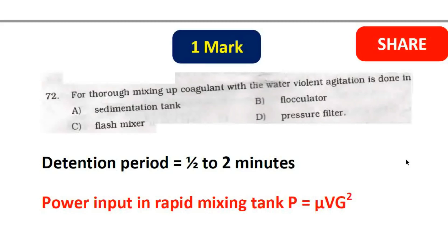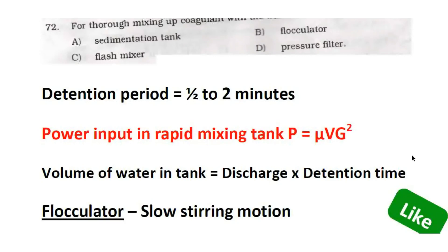Detention period for flash mixer is 1/2 to 2 minutes. In the rapid mixing tank, the power input formula is P = μ × V × G², where μ is dynamic viscosity, V is volume of water in the tank, and G is velocity gradient per second. Volume of water in the tank equals discharge multiplied by detention time. Detention time equals volume of water divided by discharge.